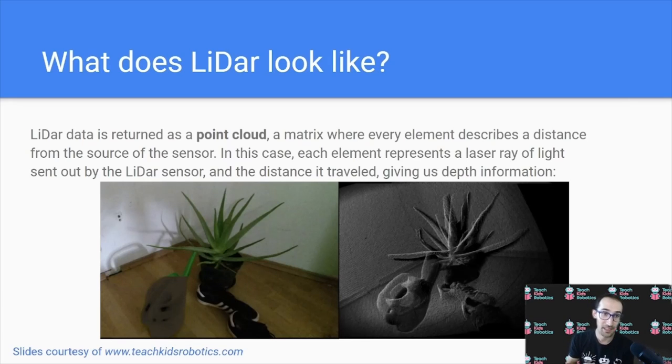So the scene on the left, if you were to visualize how does a lidar see it, we can see on the right, there's no sense of color, there's only depth information, because we only know how far each individual ray of light traveled before it returned to our sensor.